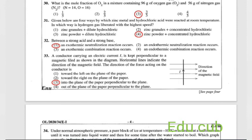Question 31: given below are four ways by which zinc metal and hydrochloric acid were reacted at room temperature. In which way is the hydrogen gas liberated with the highest speed? Definitely you will take concentrated hydrochloric acid here. The other thing is zinc granule and zinc powder. More than the zinc granule, zinc powder has a higher speed because of the surface area. Answer is the fourth one, zinc powder and concentrated hydrochloric acid.